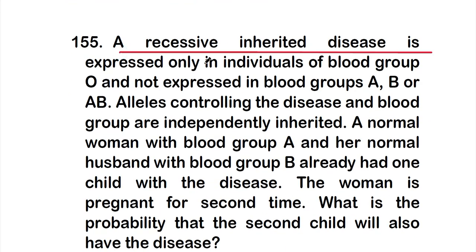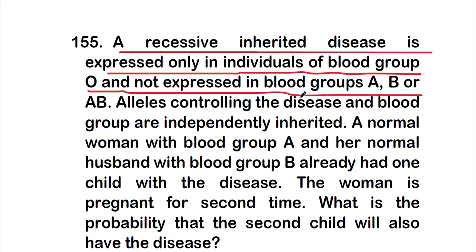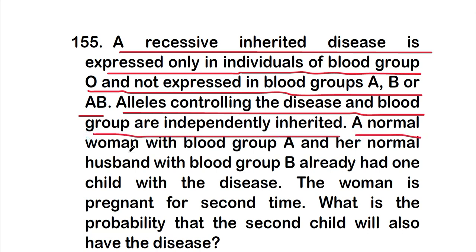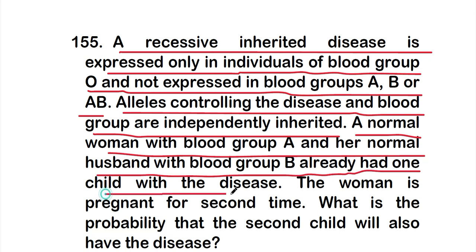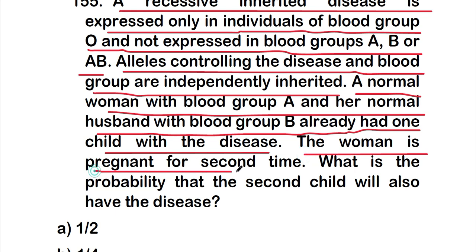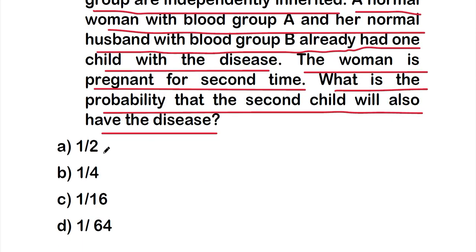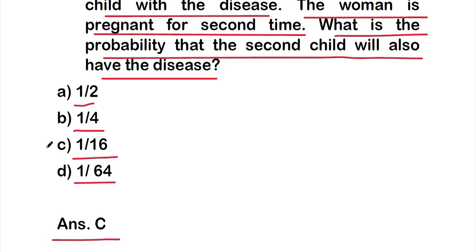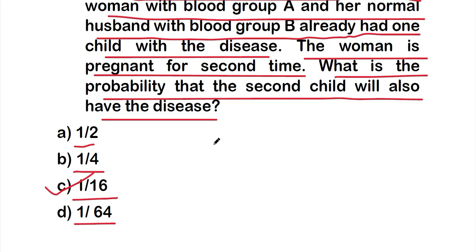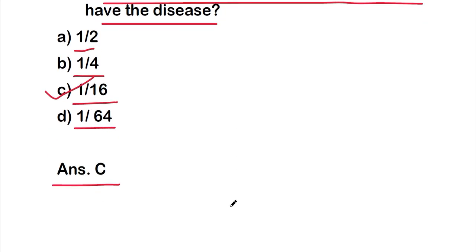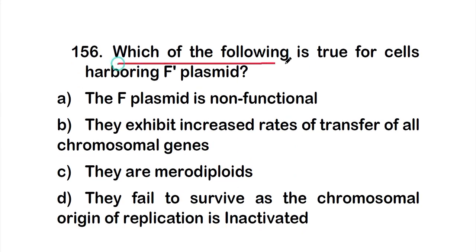Question 155: A recessive inherited disease is expressed only in individuals of blood group O, and not expressed in blood groups A, B, or AB. Alleles controlling the disease and blood groups are independently inherited. A normal woman with blood group A and her normal husband with blood group B already have one child with the disease. The woman is pregnant again. The probability that the second child will also have the disease is: option A — 1/2; option B — 1/4; option C — 1/16; option D — 1/64. The correct answer is option C — 1/16.